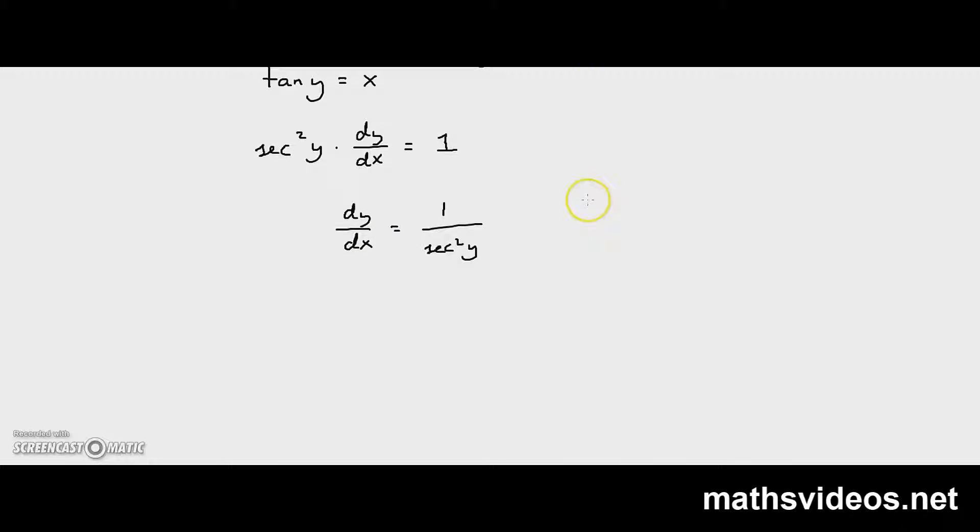Well, we know that sin y squared plus cos y squared is equal to 1. If we divide every element of this equation over here by cos y squared,